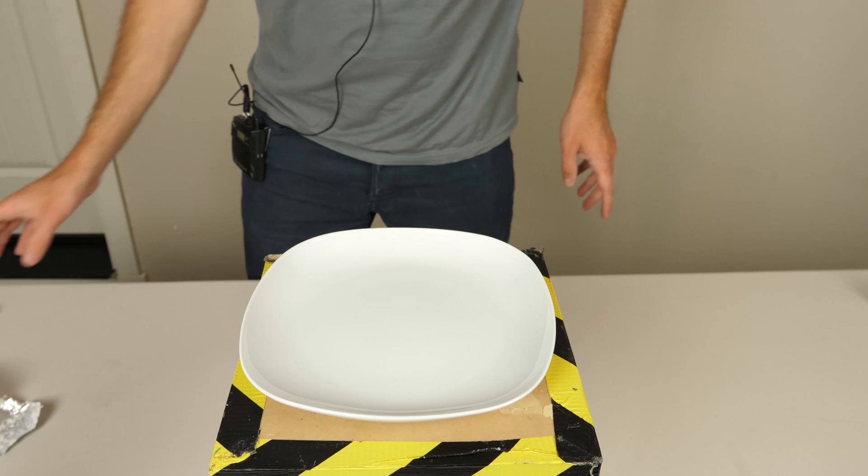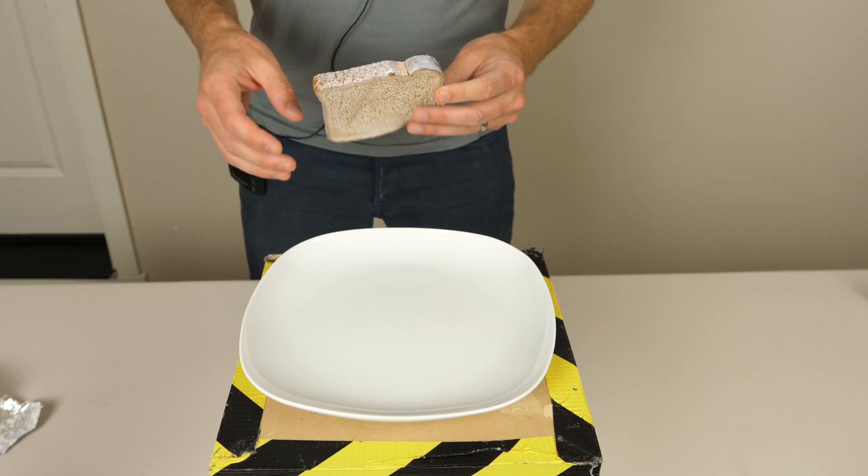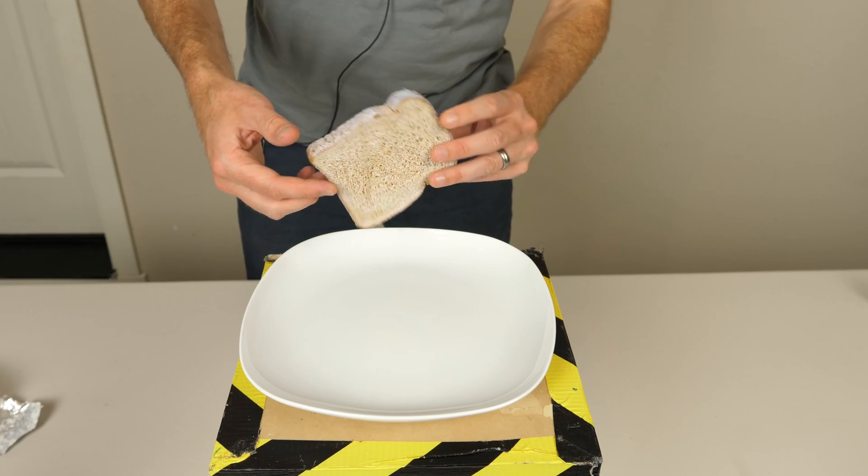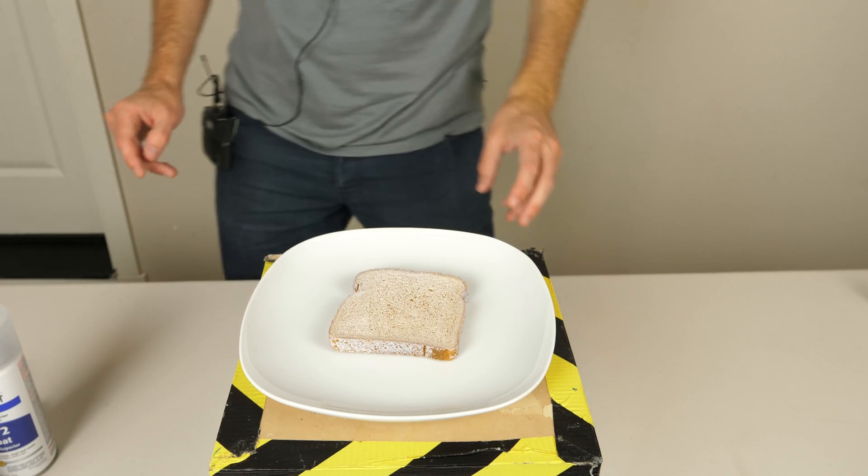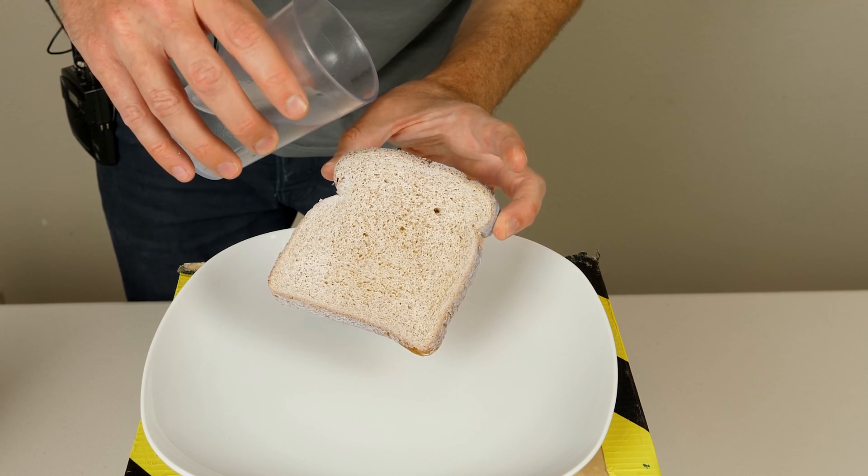Alright, so first let's try out our bread. So after letting the bread dry for 24 hours now, it has this white tint to it. So let's see what happens when we put water on it now. Okay, hydrophobic bread. Three, two, one.